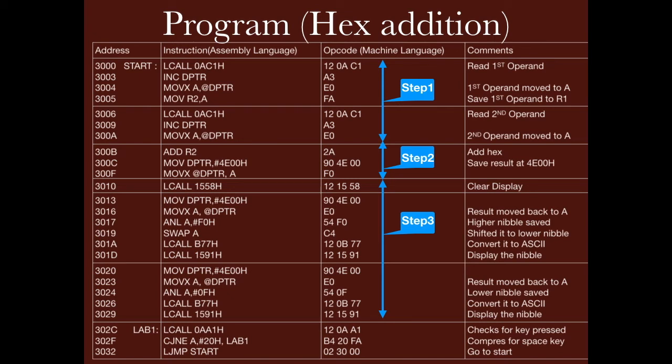The fourth step is calling a subroutine at 0AA1H, which checks for the key pressed. It remains in the same loop until we press the space key, whose equivalent is 20H. If we press the space key, the program goes back to start; otherwise it remains in the loop. If it goes back to start, it will again ask for operands, add them, and display the result. This completes the program for hex addition.